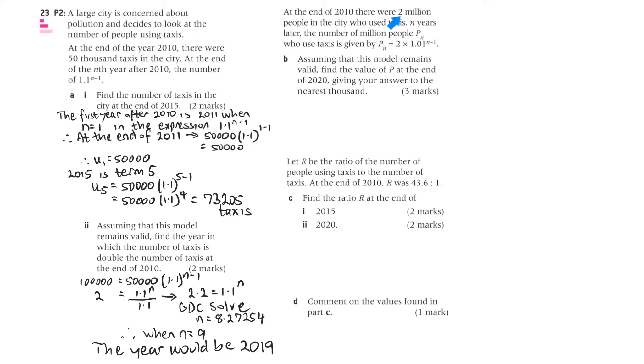At the end of 2010, there were 2 million people in the city who used taxis. N years later, the number of million people, p sub n, who used taxis is given by this expression here, this equation.